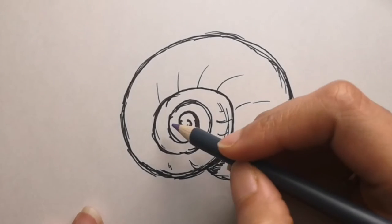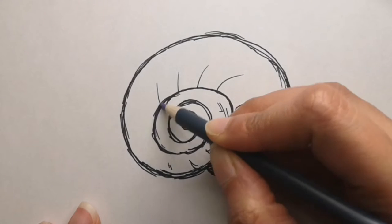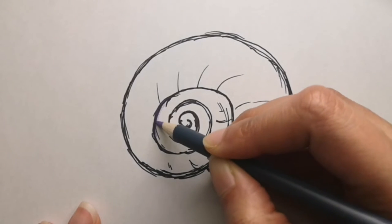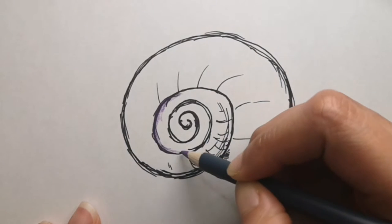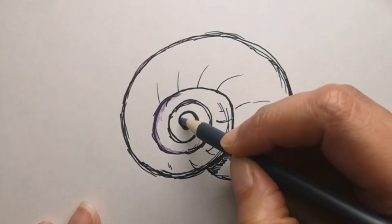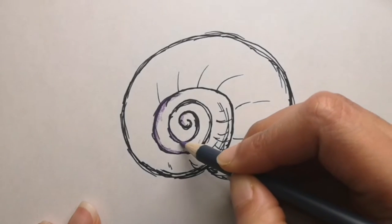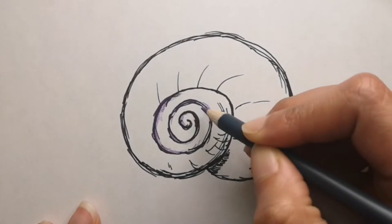Most of the seashells open to the right. Although there are some species with shells that are always sinistral or left-opening, nine out of ten shells are dextral, meaning they open to the right.